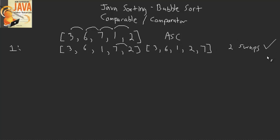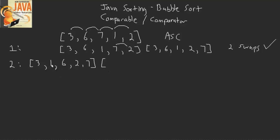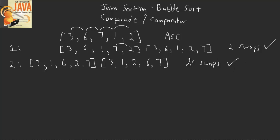Since we did perform swaps, we need to go back and do the same thing all over again from the beginning. Is three less than six? Yes. Is six less than one? No, so we need to swap six and one. That gives us three, one, six, two, seven. Then continuing with six and two: is six less than two? No, so we swap those. That gives us three, one, two, six, seven. Is six less than seven? Yes, so no swap. Two swaps again, so we need a third iteration.